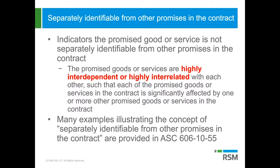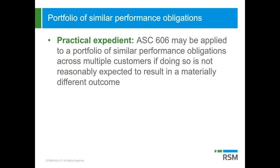There are a number of examples illustrating these concepts in the FASB guidance at ASC 606-10-55. There is also a practical expedient available: you can apply the new guidance in ASC 606 to a portfolio of similar performance obligations across multiple customers if doing so is not reasonably expected to result in a materially different outcome.